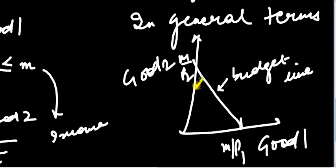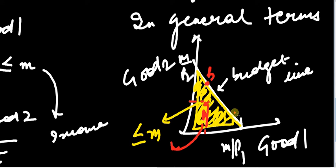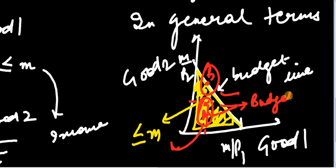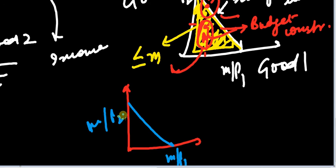Whatever is the area inside plus this line — this entire region is the area of less than or equal to income m. So if I take a bundle here, say bundle A, the total expenditure on good 1 plus good 2 is less than my income. And if I take a bundle B which is on the line, the total expenditure is equal to your income. Both of them are affordable and both constitute the budget constraint. So the budget line refers to just the line with intercepts m/p1 and m/p2, whereas the budget constraint refers to this entire feasible region.